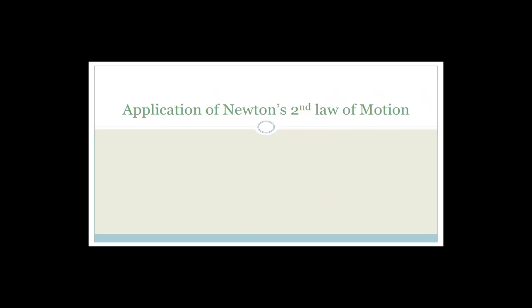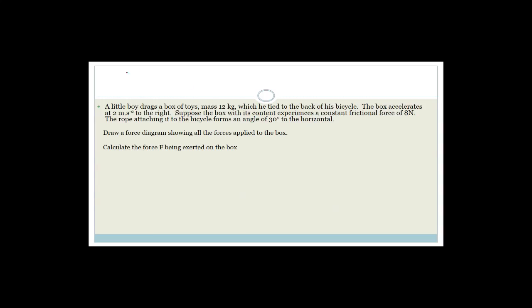Now we're going to look at the application of Newton's second law of motion: F_net equals mass times acceleration. A little boy drags a box of toys of mass 12 kilograms, tied to the back of his bicycle. The box accelerates to the right at 2 meters per second squared. The box and its contents experience a constant horizontal frictional force of 8 Newtons. The rope attached to the bicycle forms an angle of 30 degrees to the horizontal.